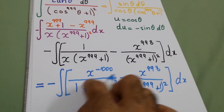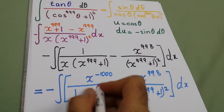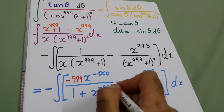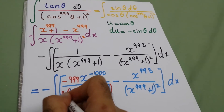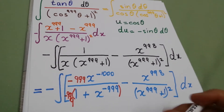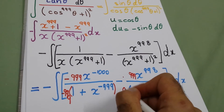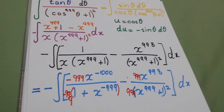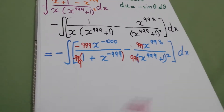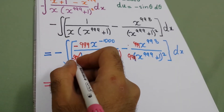Now the derivative of this denominator — we should multiply by minus 999 and divide by minus 999. Also here, we should multiply by 999 and divide by 999. So the derivative of the denominator is just the numerator.